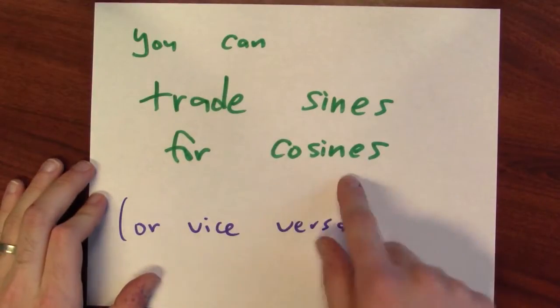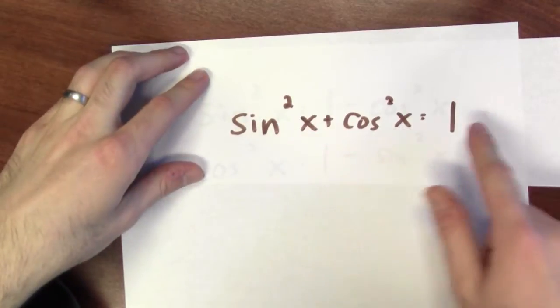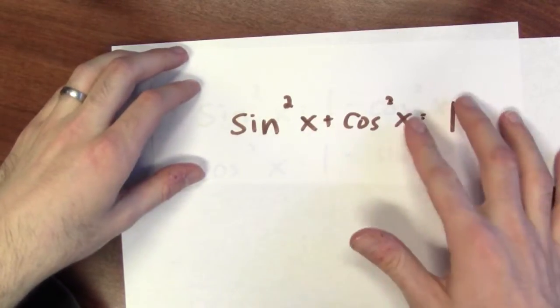When you're integrating powers of sines and cosines, I've got a motto for you to remember. You can trade sines for cosines, or vice versa. How so? Well, since sine squared plus cosine squared is 1, that is the Pythagorean identity, I can use this to get these two facts.